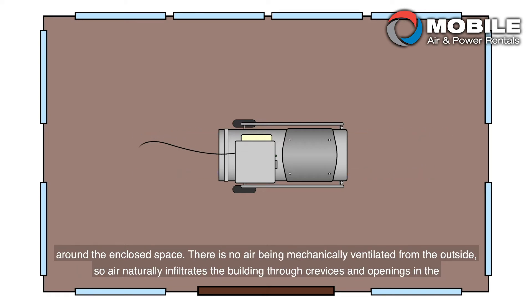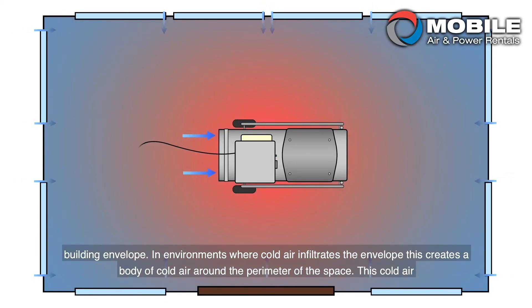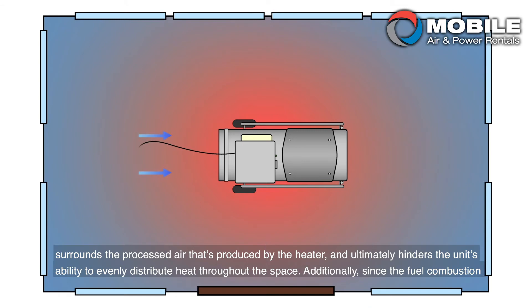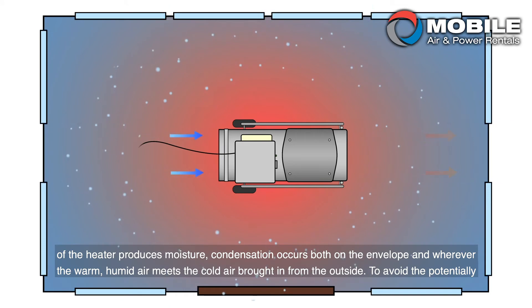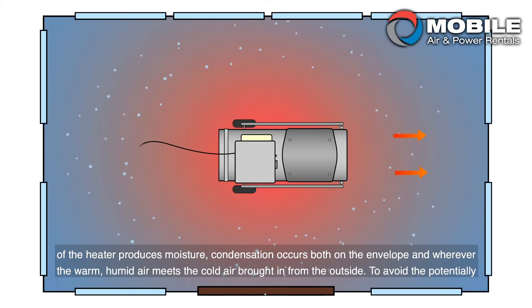Here a direct-fired heater is staged in the center of a building, where it recirculates heated air around the enclosed space. There is no air being mechanically ventilated from the outside, so air naturally infiltrates the building through crevices and openings in the building envelope. In environments where cold air infiltrates the envelope, this creates a body of cold air around the perimeter of the space, which surrounds the processed air produced by the heater and ultimately hinders the unit's ability to evenly distribute heat. Additionally, since the fuel combustion of the heater produces moisture, condensation occurs on both the envelope and wherever the warm, humid air meets cold air brought in from the outside.